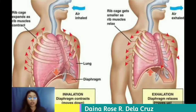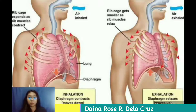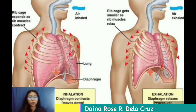Expiration is the phase of ventilation in which air is expelled from the lungs, initiated by relaxation of the inspiratory muscles. Air leaves our lungs, our chest is depressed and the lateral dimension is reduced, our rib cage descends, and our diaphragm is elevated. The lungs recoil to a smaller volume, intra-pulmonary pressure rises, and air flows out of the lungs.